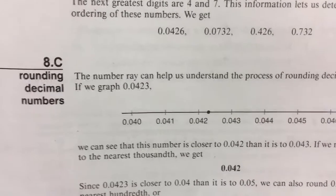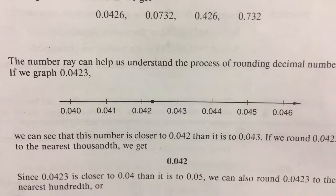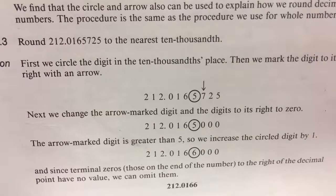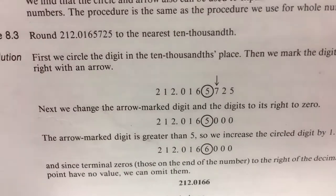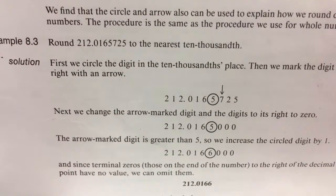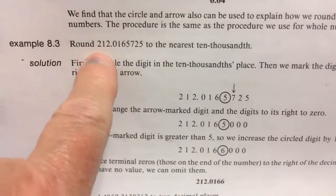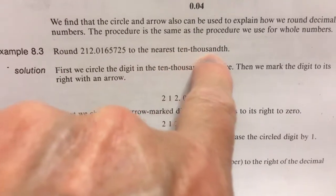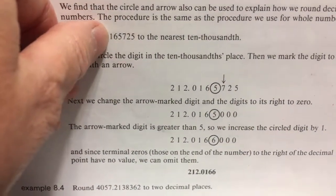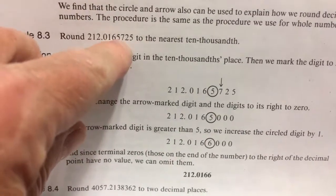The next section is rounding decimal numbers. We can round to whichever place we're told, using the same method as before — we find the place we're rounding to, then look at the digit behind it. In this problem, we round to the nearest ten-thousandths place. Remember: tenths, hundredths, thousandths, ten-thousandths — the fourth place is the one we're looking at.